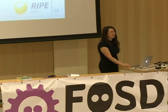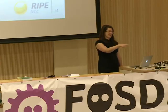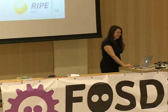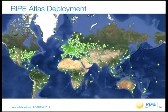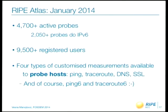We also have T-shirts for RIPE Atlas — come see me later to get them. There are now a bit more than 4,700 active RIPE Atlas probes around the world, and about half of them do IPv6. We have almost 10,000 users. RIPE Atlas users can do pings, traceroutes, DNS, and SSL measurements from these probe devices.